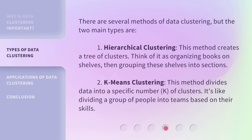There are several methods of data clustering, but the two main types are: first, hierarchical clustering — this method creates a tree of clusters, like organizing books on shelves and then grouping those shelves into sections; and second, K-means clustering — this method divides data into a specific number of clusters, like dividing a group of people into teams based on their skills.